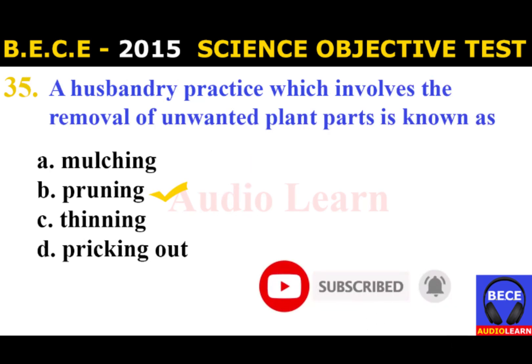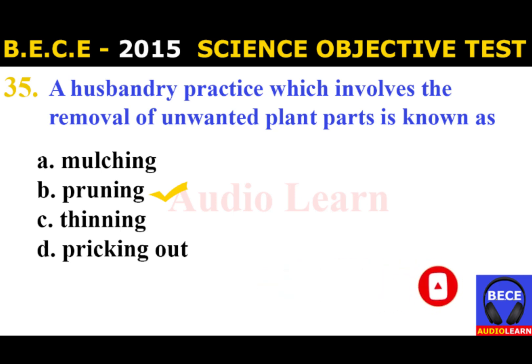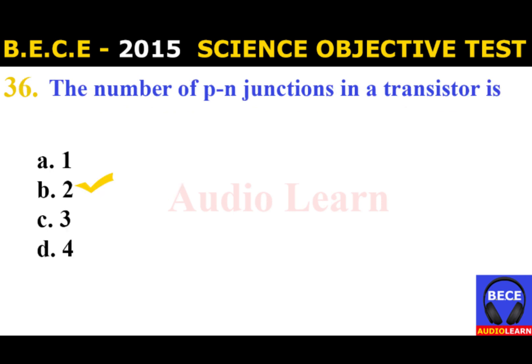Number 35: A husbandry practice which involves the removal of unwanted plant parts is known as A. Mulching, B. Pruning, C. Thinning, D. Budding. The answer is B. Pruning.